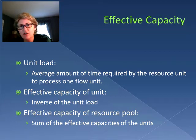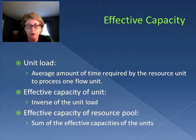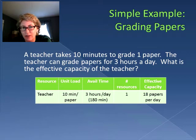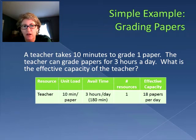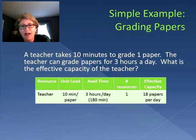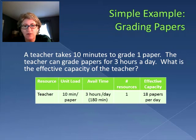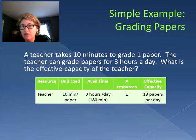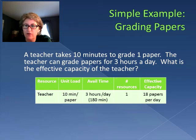Let's use a very simple example using one resource pool and walk through calculating that effective capacity. Let's say we have a teacher who takes 10 minutes to grade a paper, and that teacher has available time of three hours a day. What is the effective capacity of the teacher? The resource pool are teachers, in this case we have one teacher, and it takes that teacher 10 minutes to grade a paper — that's our unit load — and our available time is three hours per day. We have a total of 180 minutes per day to grade papers. So our effective capacity is 180 minutes divided by 10 minutes per paper, which equals 18 papers per day. We only have one resource in our resource pool, so our effective capacity is 18 per day.